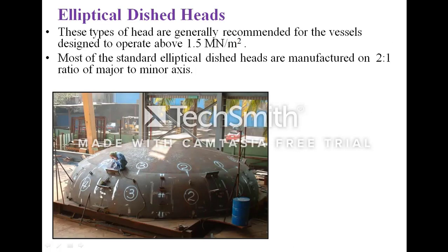The next type is the elliptical dish head. These heads are generally recommended for process vessels operating above 1.5 MN/m². Most standard elliptical dish heads are manufactured on a 2.5 to 1 ratio of major to minor axis, but this ratio can be a maximum of 2.6 to 1.